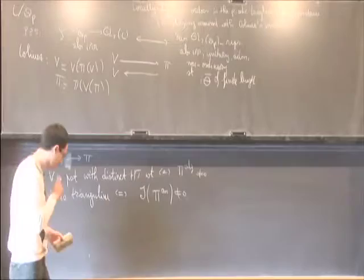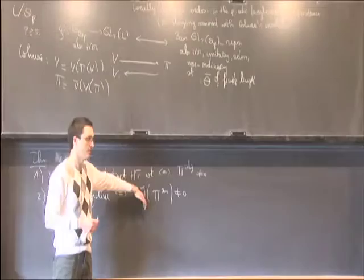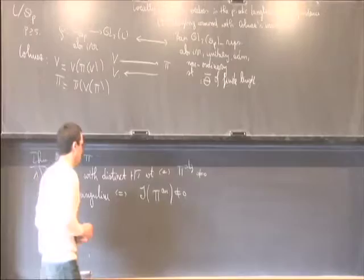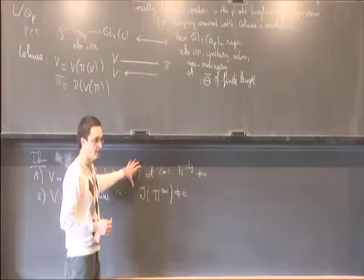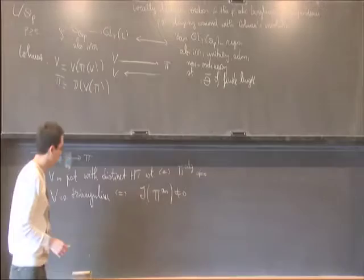And I claim that V is trianguline if and only if, when you look at the locally analytic vectors of the Banach space representation and take the naive Jacquet module, this is non-zero. This confirms Colmez's philosophy that trianguline representations correspond to the principal series on the p-adic automorphic side. You can also work with Emerton's locally analytic Jacquet module — the same conclusion holds. In the two-dimensional case with absolutely irreducible Banach space representations, the two Jacquet modules are essentially the same object.